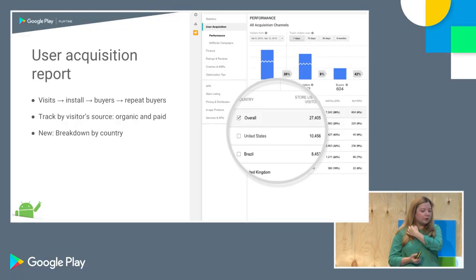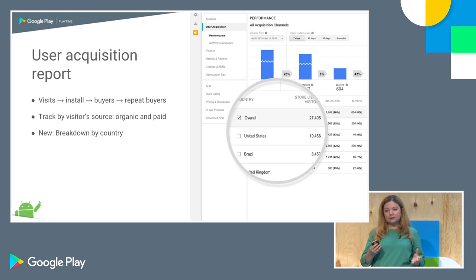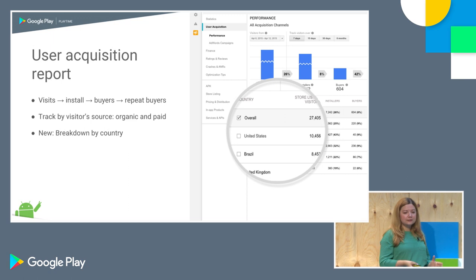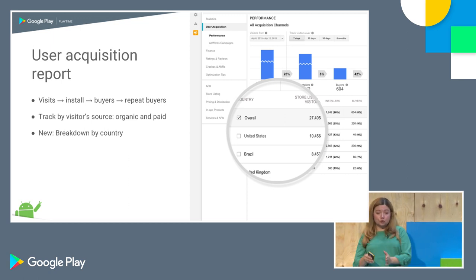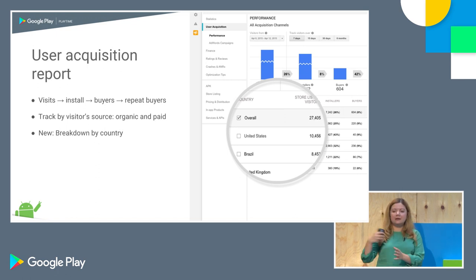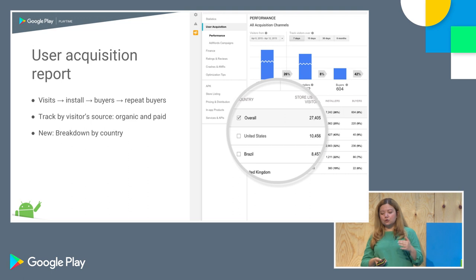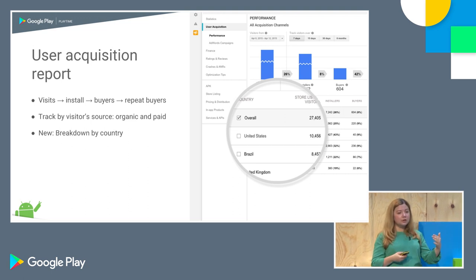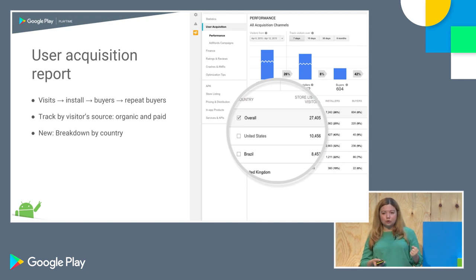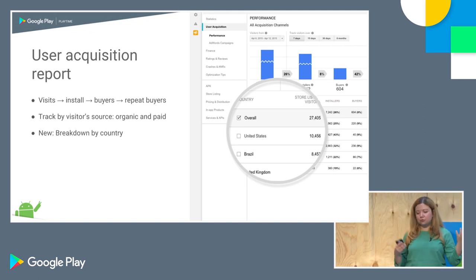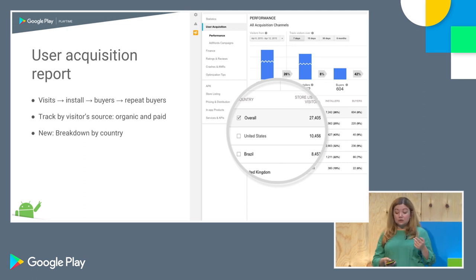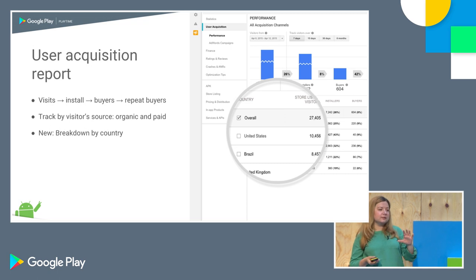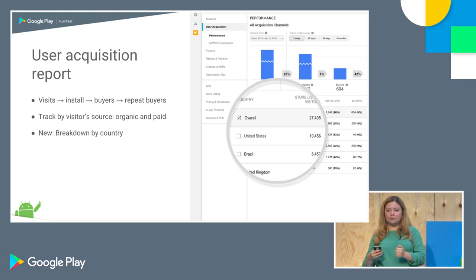Let's talk about analyzing, experimenting, and optimizing. The first tool is the User Acquisition Report — a conversion funnel that shows how many visitors to your store listing you're getting, how many are turning into installers, and how many are buying something within your app and becoming repeat buyers. You can break it down by acquisition source — organic traffic through the Play Store or paid traffic through ads. As of very recently, you can also break it down by country, to see how you're converting, for example whether your localizations are underperforming in Asia compared to Europe.